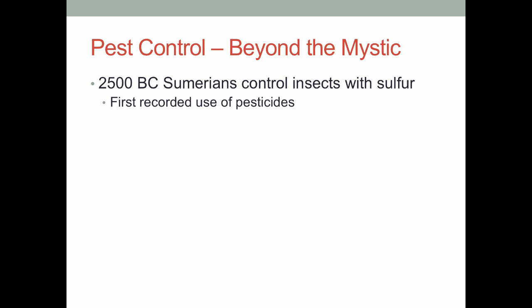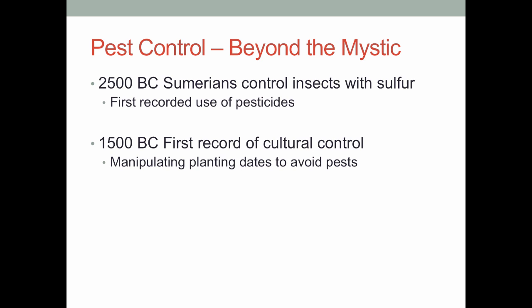By 1500 BCE, we have records suggesting people were using cultural control — alternating their planting dates, either planting early or late depending on the pest cycle, in order to avoid the worst infestations. Then in 1200 BCE, there's evidence the Chinese had developed botanical insecticides — they discovered ways to extract insecticidal compounds from plants, and when they planted their seeds they would pour that extract over them to protect against various worms and grub-type larvae in the soil. The Chinese were really ahead on a lot of this stuff — they figured out you could treat with mercury or arsenic in the hair for lice and fleas, chalk and wood ash for indoor pests, all sorts of things.